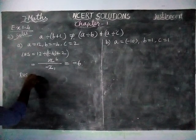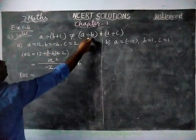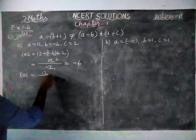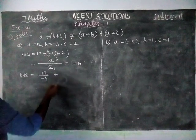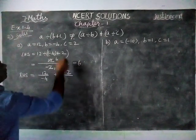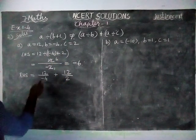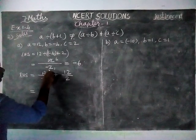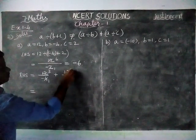Now we verify the right hand side. RHS is equal to A divide B plus A divide C. A value is 12 divide by B value minus 4, plus 12 divide by C value 2. Dividing: 3 fours are 12, and 6 twos are 12.